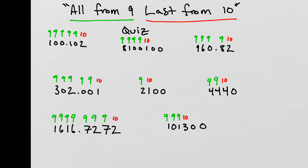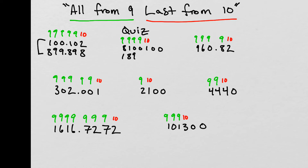Hopefully you didn't find this too difficult — it's really simple to apply and will come in handy later on. First problem: 9 minus 1 is 8, 9 minus 0 is 9, 9 minus 0 is 9, 9 minus 1 is 8, 9 minus 0 is 9, and 10 minus 2 gives us 8. Don't forget to bring that decimal down. These two numbers are complements. Second: 9 minus 8 gives us 1, 9 minus 1 gives us 8, 9 minus 0 is 9, 9 minus 0 is 9, and 10 minus 1 is 9. Bring those two zeros down.